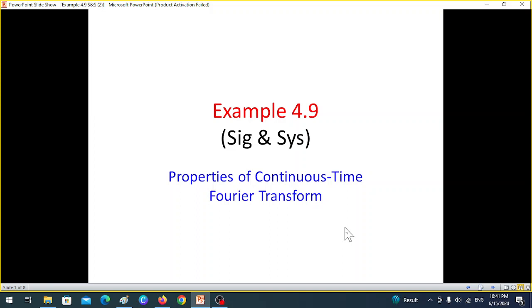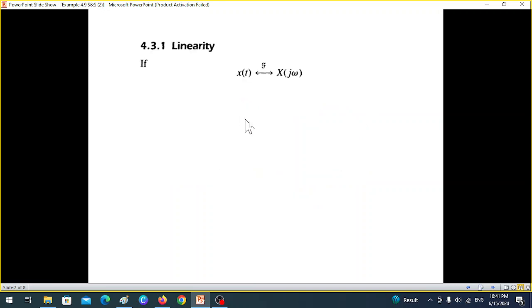This video is from signals and systems example 4.9, properties of continuous-time Fourier transform. Two properties of the Fourier transform are important. Let's understand the first, which is called the linearity property.